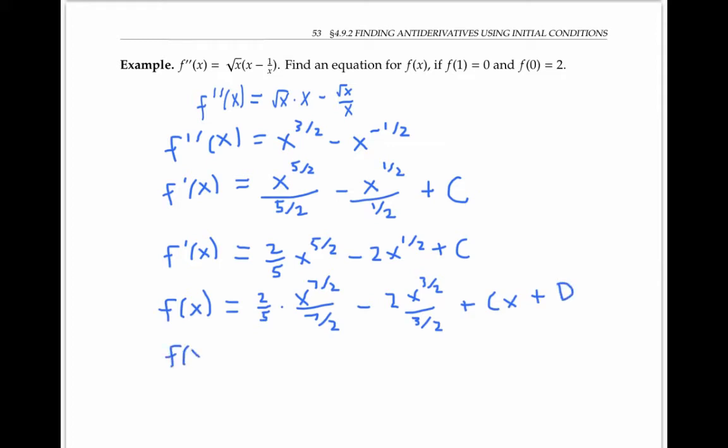After simplifying a bit, I'm ready to use my initial conditions in order to solve for my constants C and D. When I plug in zero for x, all my x terms vanish and I'm just left with D. So D has to equal two.